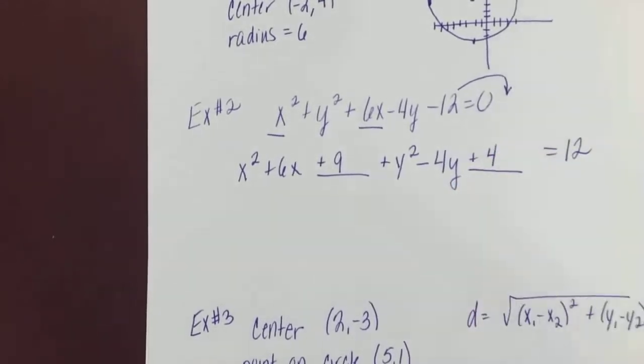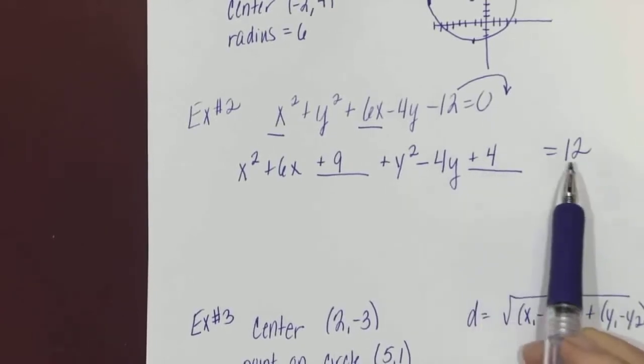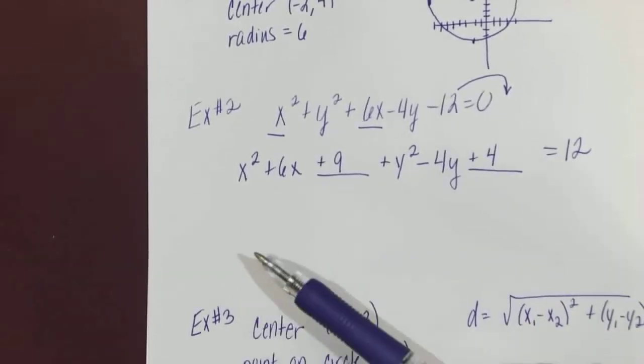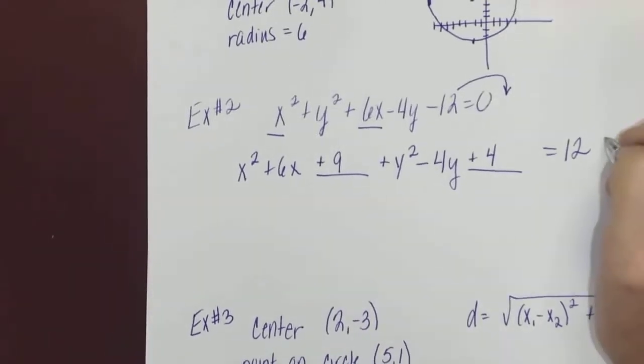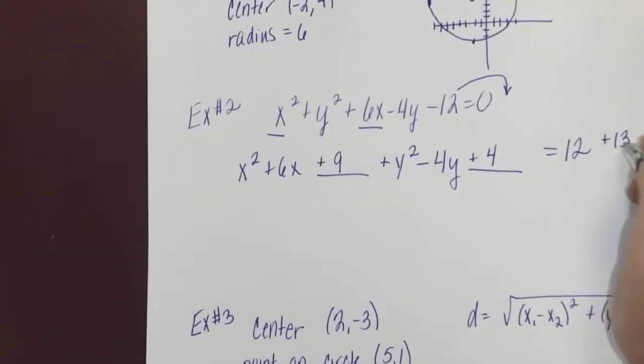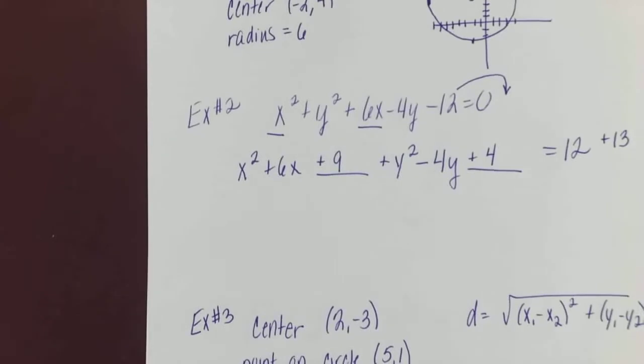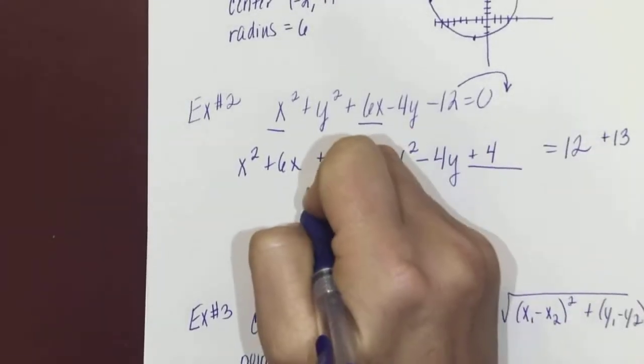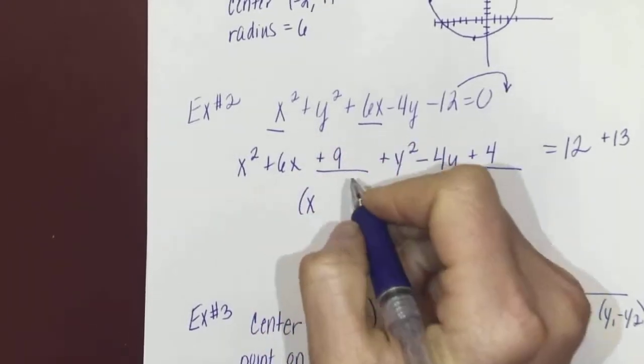Now I can't just add a 9 and a 4 to one side of the equal sign. So if I added 9 and 4, that means I added 13 to the left. I will need to add 13 to the right to make it balanced. This right here, x² + 6x + 9, would factor into (x + 3)(x + 3), which I simply write as (x + 3)².